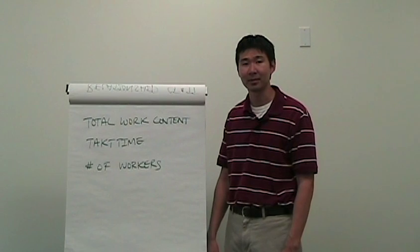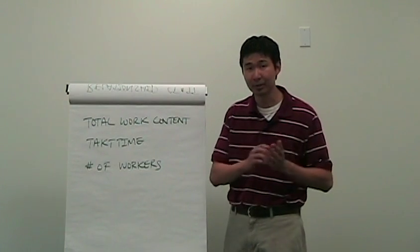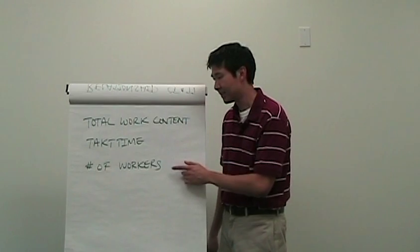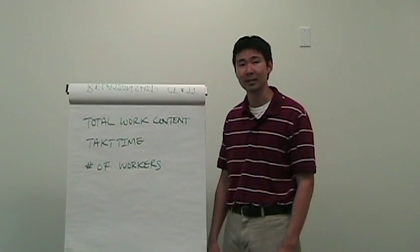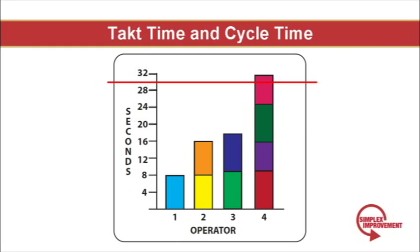The total work content is the amount of time it takes to build a product from beginning to end. You can roughly measure this by having a single operator take a product from beginning and build it all the way through, or you can sum up your cycle times. If you take the total work content and divide it by your Takt time, this gives you a theoretical number of workers needed to meet Takt time. This represents the total work content for building a paper airplane — from start to finish it takes about 75 seconds. The red line represents Takt time; in this case the customer wants planes every 30 seconds. It would be impossible for one worker to meet the Takt time of 30 seconds, so we need to redistribute the work over several workers. This was our initial attempt at dividing the total work content among four workers, but we're still not meeting Takt time because worker four's work is still above the red line.